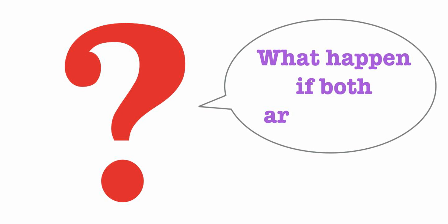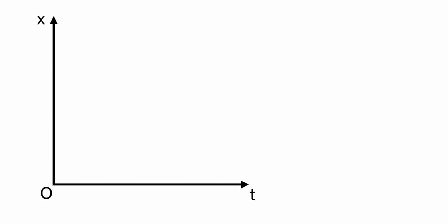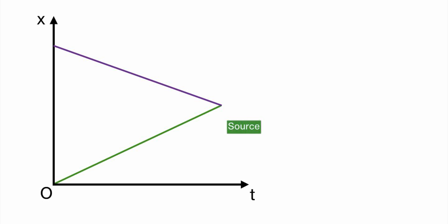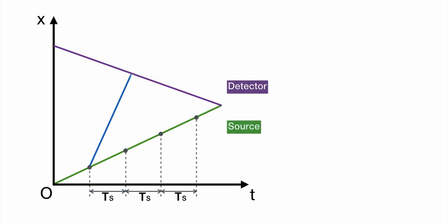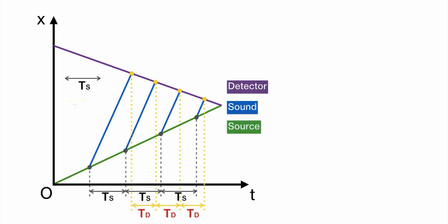That's great! So what happens if both are moving? Same method! Let's draw the position-time graph for the case where both the detector and the source are moving. The source is moving toward the detector with a constant velocity from the origin O. The detector is also moving toward the source. The source is emitting a sound with a regular interval. The period of emission is Ts. The emitted sounds are transferring with sound velocity and reach the detector. The detected period Td is shorter.